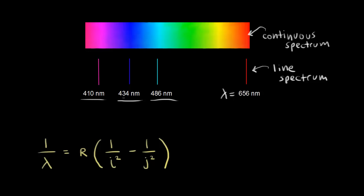We can do that by using the equation we derived in the previous video — I call this the Balmer-Rydberg equation. One over lambda, where lambda is the wavelength of light emitted, is equal to R, the Rydberg constant, times one over i squared — where i refers to the lower energy level — minus one over j squared, where j refers to the higher energy level.